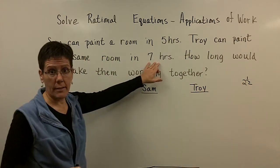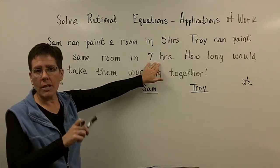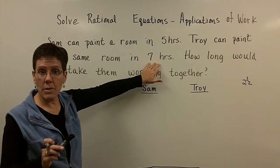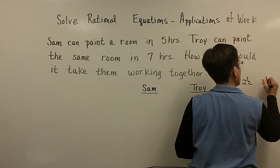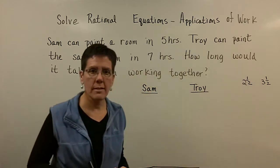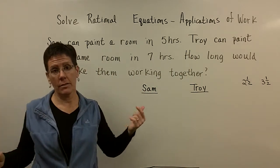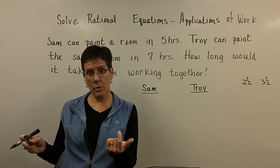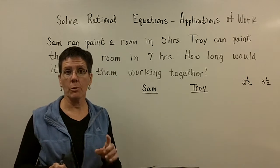Let's say you had two Troys. So you cloned Troy, and they put them together in a room, and they could paint the room by themselves in seven hours. So couldn't they paint that room in three and a half hours? But we're not going to put clones together. We're going to put Sam, who's a little bit faster, with Troy, who's a little bit slower, and we're going to see how fast they can paint that room.